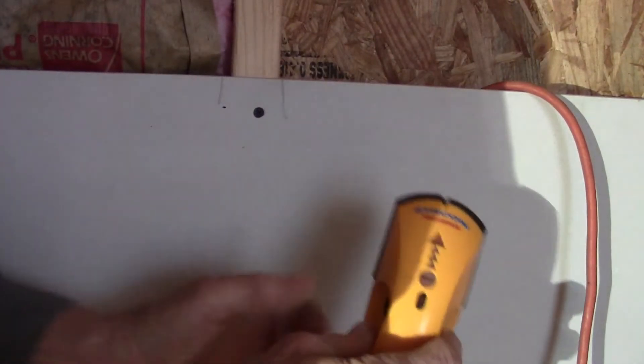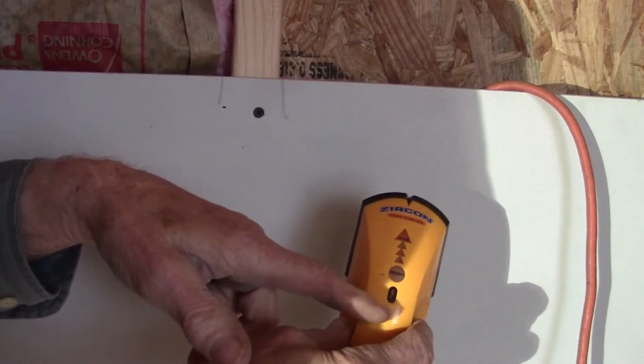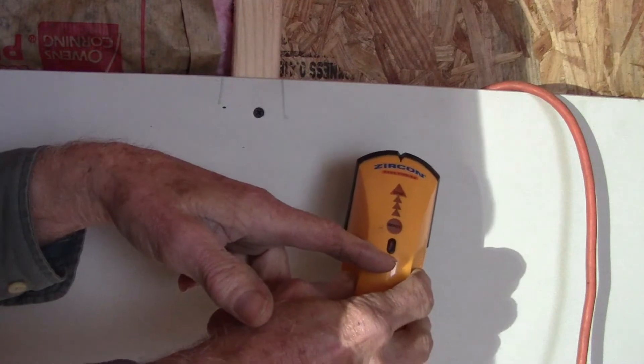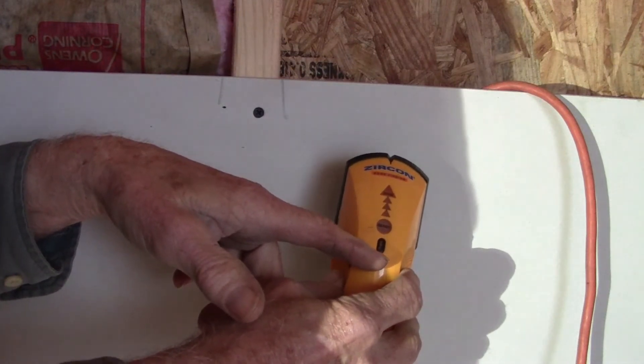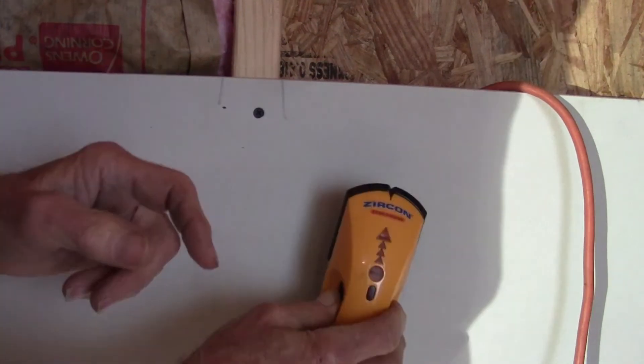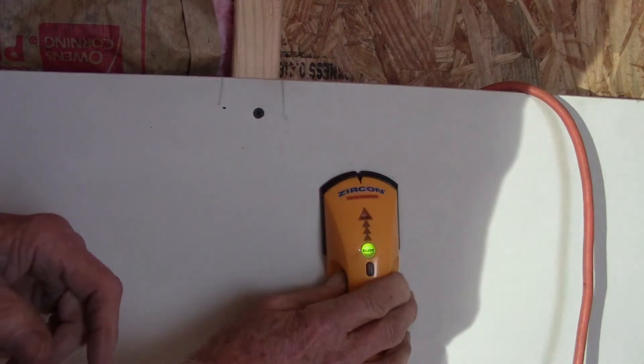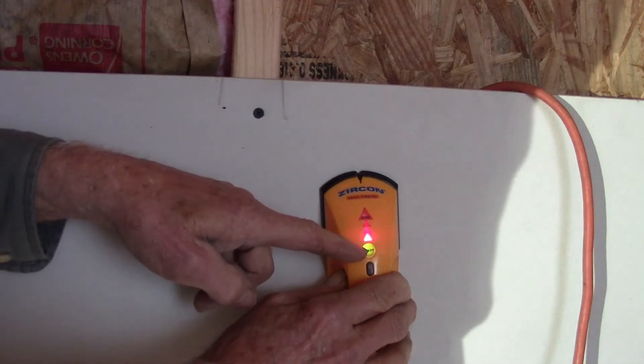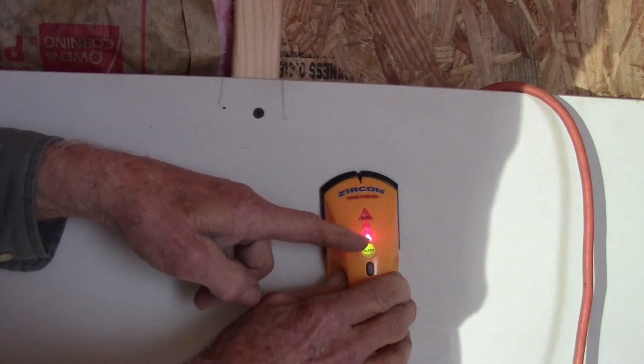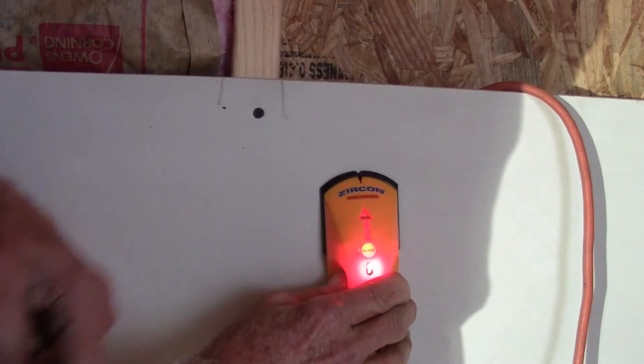What I like about this particular one is it's got an indicator on here to let you know there's electric wire in there. You want to push this against the wall, wait for the green light, and make sure there's no red light showing. So start over.